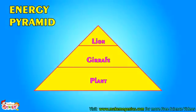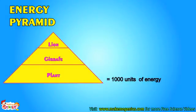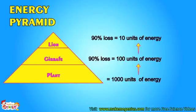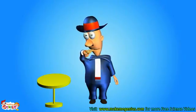Look at this pyramid — it is called an energy pyramid. It shows that energy available becomes lesser and lesser as we move to the top of the food chain. To understand the energy pyramid, let's assume plants absorb 1,000 units of energy from the sun. When a giraffe eats the plant, 90% energy is lost, so the giraffe only gets 10% of the energy — that is 100 units. Now when a lion eats the giraffe, 90% energy is again lost, and the lion gets only 10 units of energy. Now you know more about food and energy.